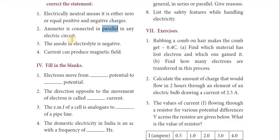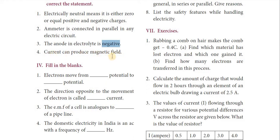Third statement is also false: the anode in an electrolyte is negative. This is incorrect — it is positive. The word 'negative' will be replaced with 'positive.' Fourth statement: current can produce a magnetic field — that statement is correct, so it is true.